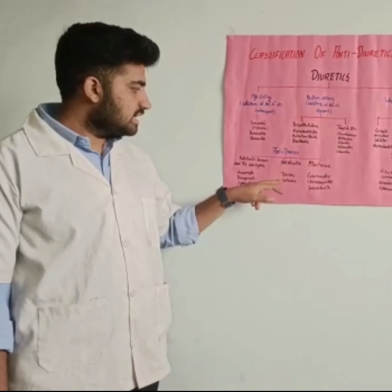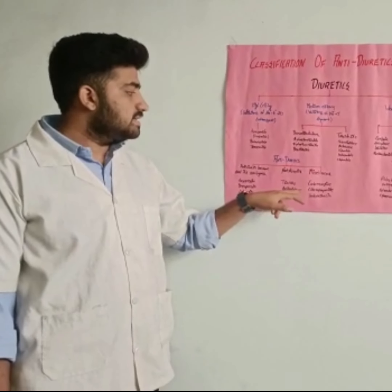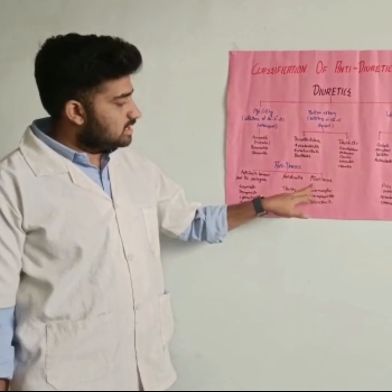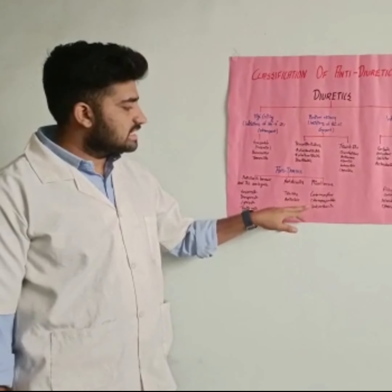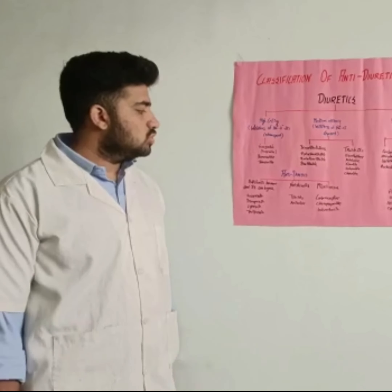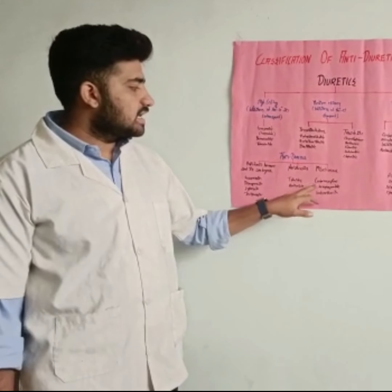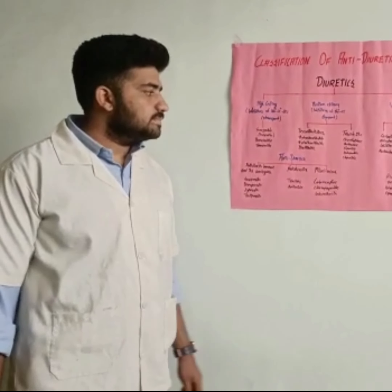Natriuretics are thiazide and amiloride. Miscellaneous antidiuretics are indomethacin, chlorpropamide, and carbamazepine.